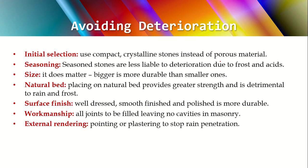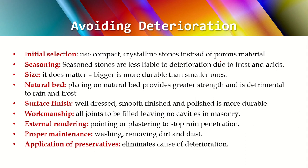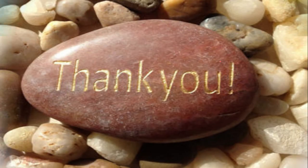Next is external rendering — you can apply pointing, fill the joints with mortar between the rocks or stones, and also plaster the top surface to stop rain water from penetrating into the stone. Next is proper maintenance: when using stones for walls or architectural elements, wash them timely and remove dust and dirt. Finally, if you do not want to maintain the stone all the time, you can apply preservatives, which will generally stop deterioration.